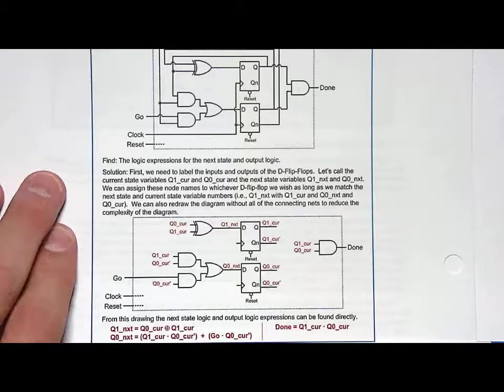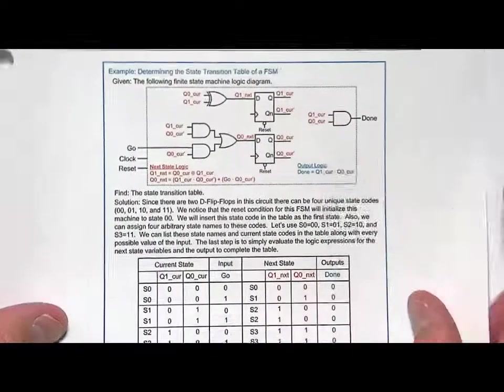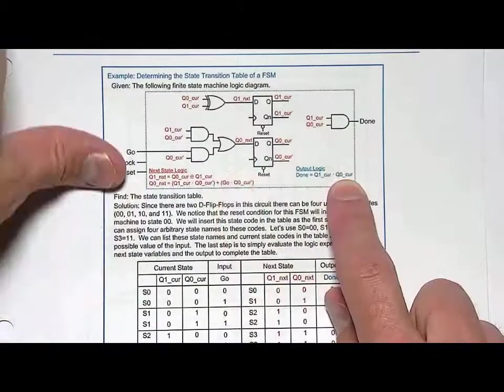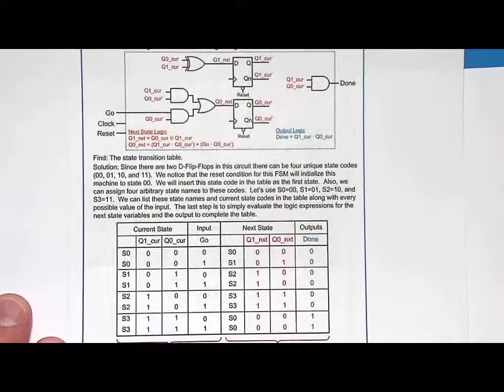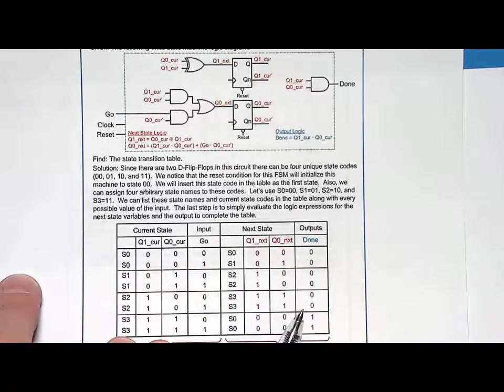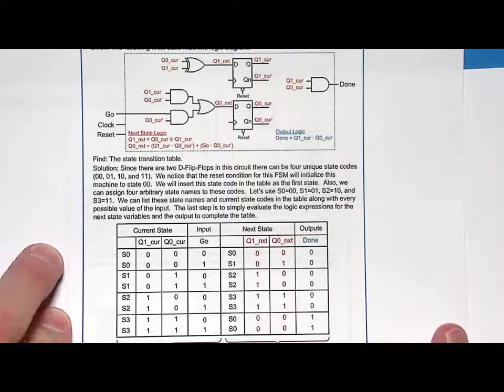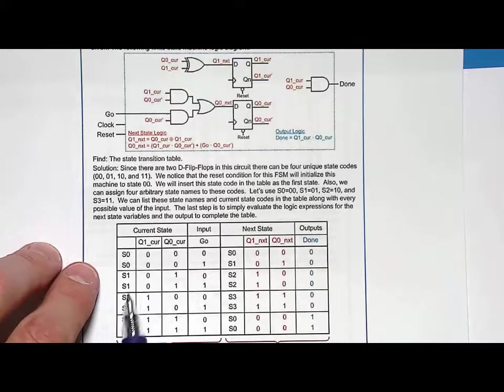Now we have our logic expressions. From that, we can actually reverse engineer the state transition table, which gives us information about how this machine works. Here's our circuit again with our next state logic expressions and our output logic. What we do is build up a table and we list all possible states. Now I have state names. We have no idea what the original designer named the states. It could have been red, green, yellow, blue. But we're just going to call them something agnostic, S0, S1, S2, and S3.